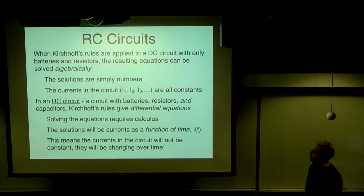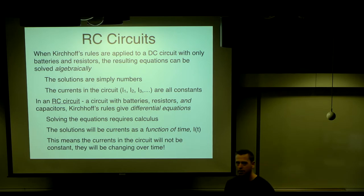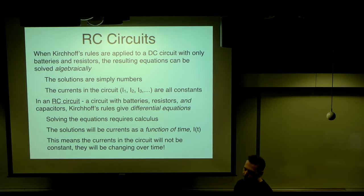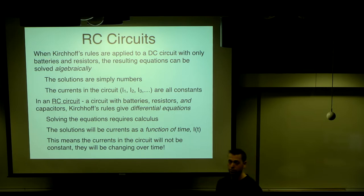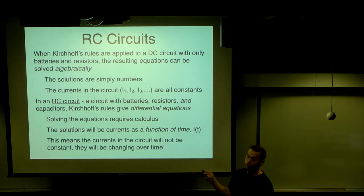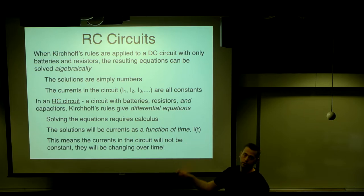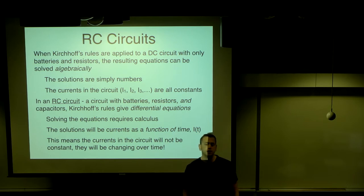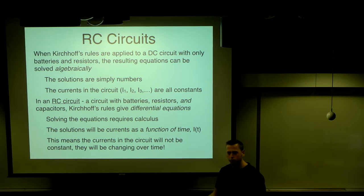Let's take a big-picture look at what we've learned so far about how to analyze a circuit. We've learned about Kirchhoff's rules and how to apply them to a DC circuit. In a situation where the circuit only has batteries and resistors, the resulting equations can be solved algebraically — you just have a bunch of unknown currents to solve for, and those currents are just numbers. The solution for I1, I2, I3 is just a set of constant values, not changing over time.